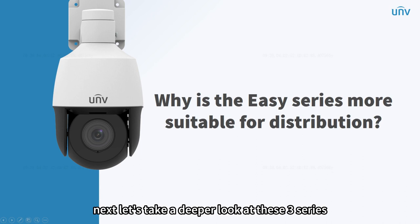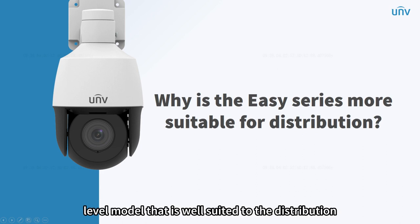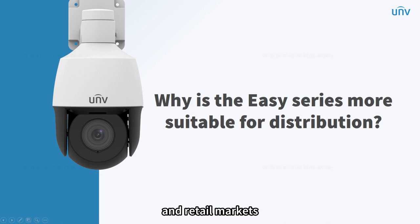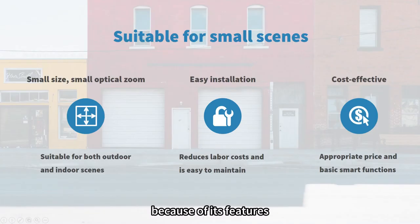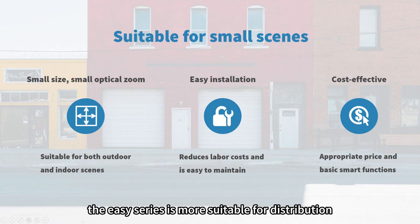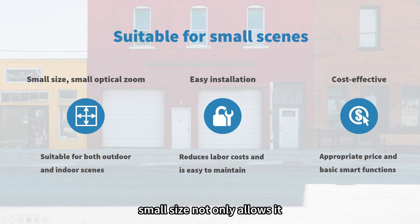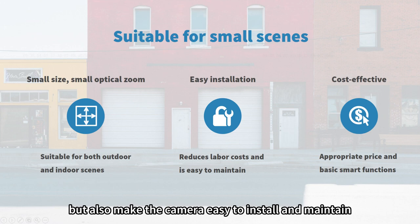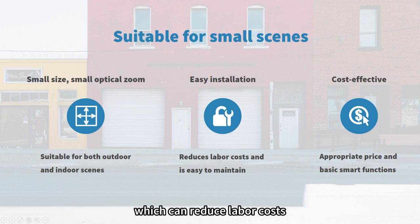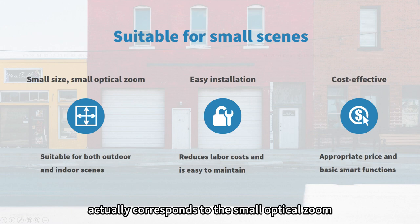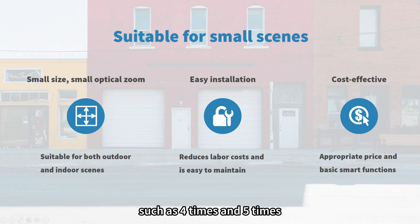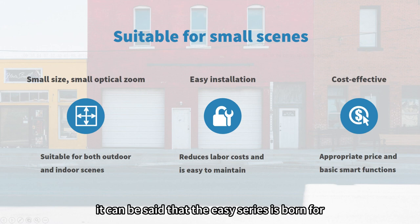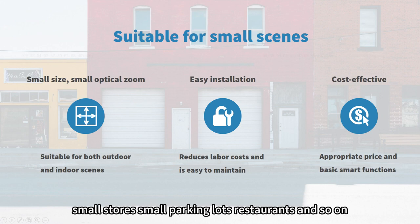Now let's take a deeper look at the three series. The Easy series is an entry-level model well-suited to distribution and retail markets. Its 3-inch small size allows it to be used both outdoors and indoors with high scene adaptability, and makes the camera easy to install and maintain, reducing labor costs. The small size corresponds to small optical zoom such as 4x and 5x, perfectly suited to small scenarios like small stores, small parking lots, and restaurants.